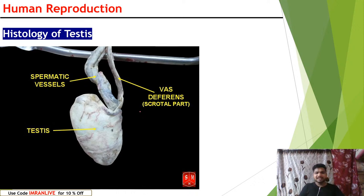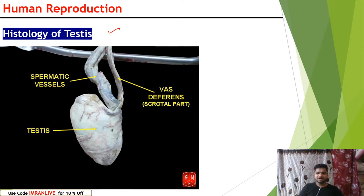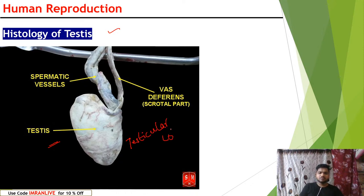Let us understand a deep view of the testes. Inside the testes, small testicular lobules are present — testes contain testicular lobules like compartments. Many testicular lobules are present inside each testis, and here we have the vas deferens. The epididymis in this region stores the sperm. Inside the epididymis, sperm become motile and the growth of flagella starts developing. Then sperm are transferred through the vas deferens into the urethra, from where they are ejaculated.